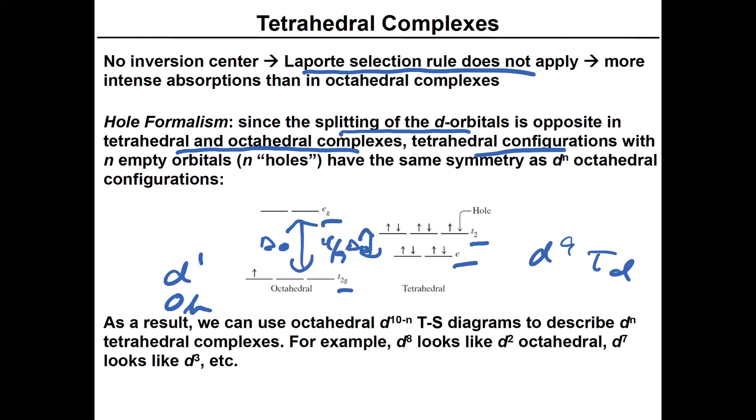Tetrahedral configurations with N empty orbitals—an empty orbital or orbital lacking an electron is also called a hole. So a hole is a vacancy, much like shown right here. That's the vacancy in the T2 orbital set.